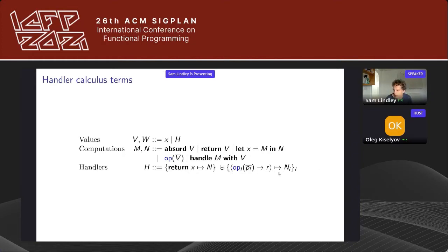We need something to get going: an empty type is provided, along with a type of handlers. This handler type takes a computation of type C and handles it, producing a computation of type D. A computation type returns a value but also has an effect, and an effect is just given by a signature of operations — I've chosen to make my operations n-ary, which gives an easy way of encoding products. The only value terms are variables and handlers. A handler consists of a return clause and a collection of operation clauses. Because we have the empty type we also have an elimination form, absurd. I've included return and let for niceness, and then we have operations and handling of computations. Notice that the handler here is a general first-class value.